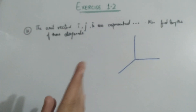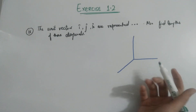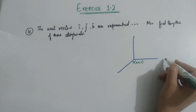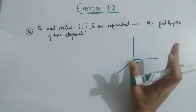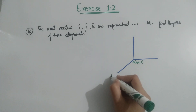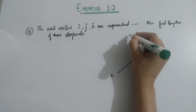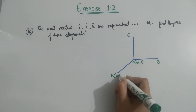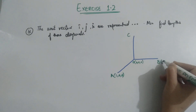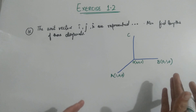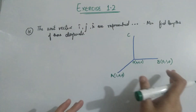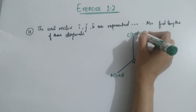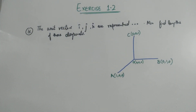First find the diagonals and then find their lengths. The origin is (0, 0, 0). Along the x-axis only x changes, so you get vertex (1, 0, 0). Along the y-axis you get (0, 1, 0). Along the z-axis you get (0, 0, 1). This is a unit cube with side length one. Placing the remaining vertices completes the cube.